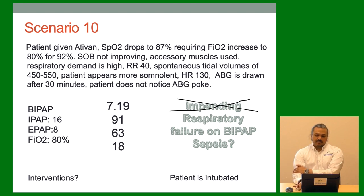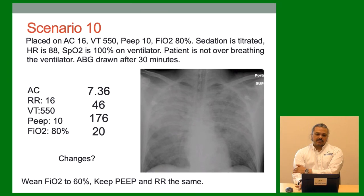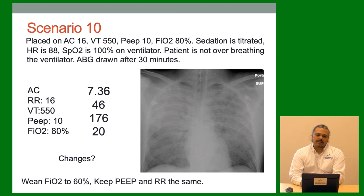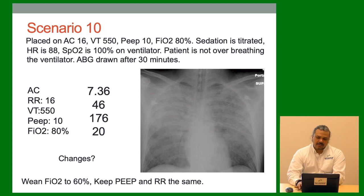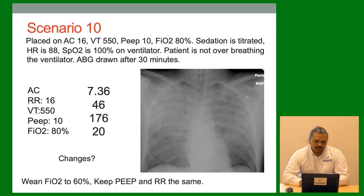Placed on AC: rate 16, tidal volume 550, PEEP 10, FiO2 80%. Sedation is titrated, heart rate 88, SAT 100% on the vent, patient is not over-breathing. ABG after 30 minutes on same settings: 7.36 / 46 / 176 — getting better. X-ray is not looking great — a lot going on. Changes: wean FiO2 to 60% because we don't want SPO2 above 100. Keep the PEEP and respiratory rate the same because he has a lot of fluid issues and a lot going on.